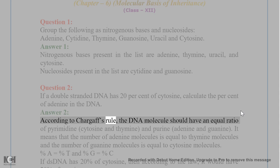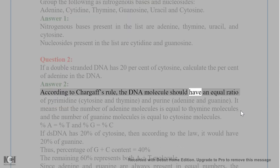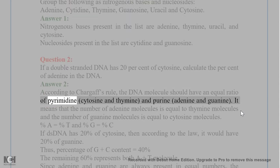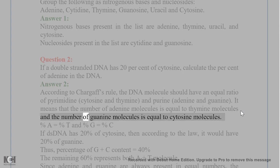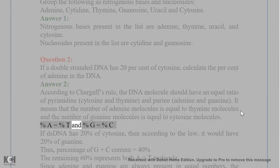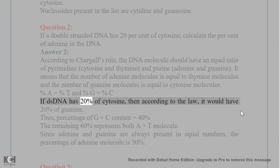According to Chargaff's rule, the DNA molecule should have an equal ratio of pyrimidines — cytosine and thymine — and purines — adenine and guanine. This means the number of adenine molecules equals thymine molecules, and guanine molecules equal cytosine molecules. So percent A equals percent T, and percent G equals percent C. If dsDNA has 20% cytosine, then it would also have 20% guanine.